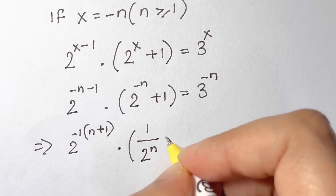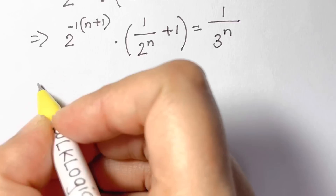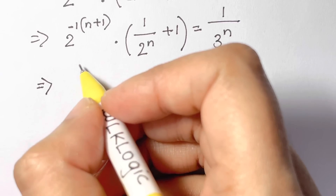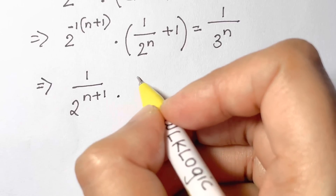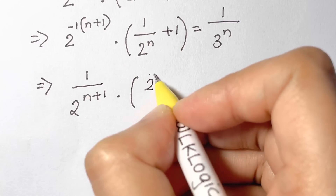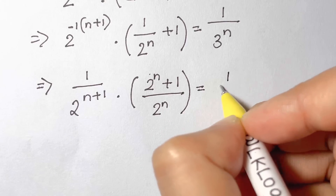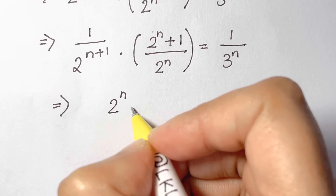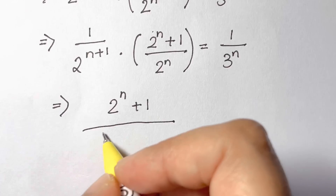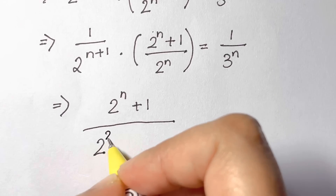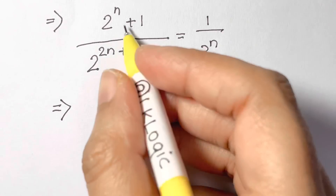With the negative exponent, we have the reciprocal: 1 over 2 to the power of (n plus 1). Taking the LCM, we are left with 2 to the power of (n plus 1) over 2 to the power of n, equals 1 over 3 to the power of n. That gives 2 to the power of (n plus 1) in the numerator and 2 to the power of (2n plus 1) in the denominator, equal to 1 over 3 to the power of n. Cross multiplying: